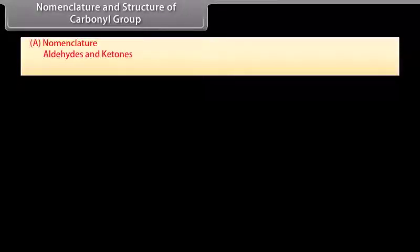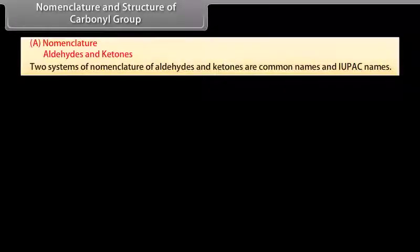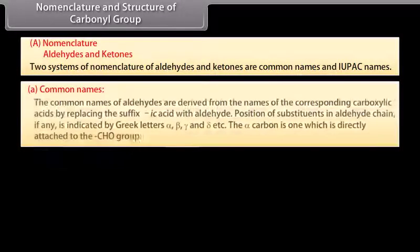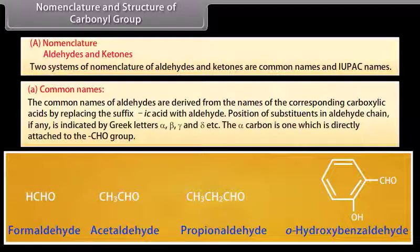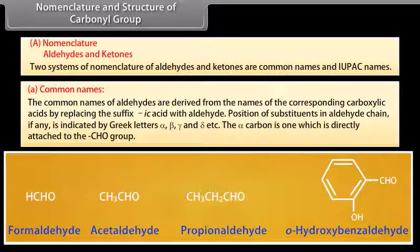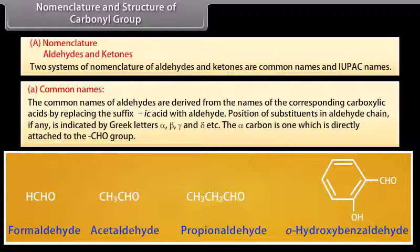Nomenclature and structure of carbonyl group. Two systems of nomenclature of aldehydes and ketones are common names and IUPAC names. The common names of aldehydes are derived from the names of the corresponding carboxylic acids by replacing the suffix 'ic acid' with 'aldehyde'. Positions of substituents in the aldehyde chain, if any, are indicated by Greek letters alpha, beta, gamma, and delta.